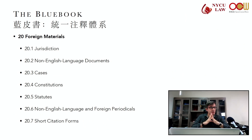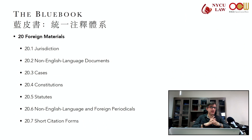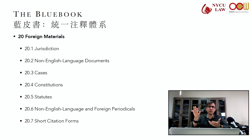Rule 20.4 — constitutions. The rule is to cite all foreign constitutions by name. If it is not clear from context that this is a constitution — or if it's not in English — then include the word "constitution" in brackets.